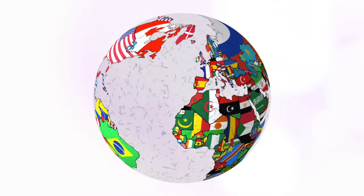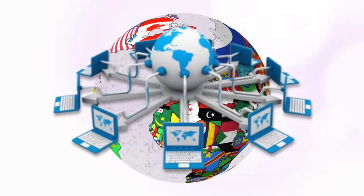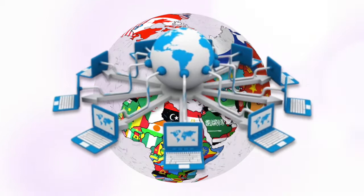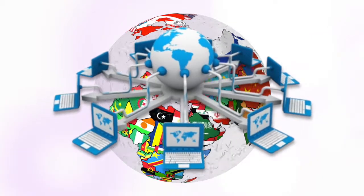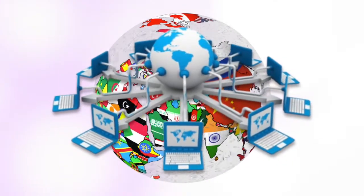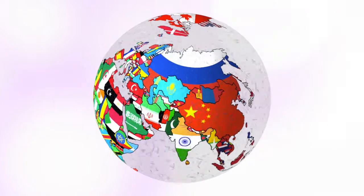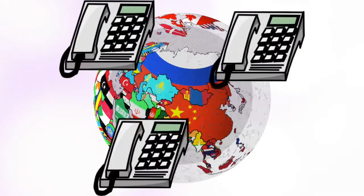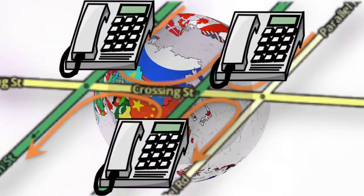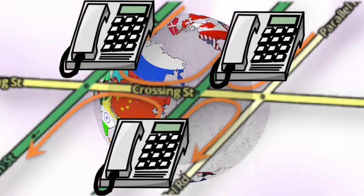Essentially, the Internet is the technical infrastructure that makes the web possible. In less than 20 years, the Internet has expanded to link up around 210 different nations. Even some of the world's poorest developing nations are now connected. Think of it like a telephone network or a network of highways that crisscross the world. Telephones and highways are networks, just like the Internet.